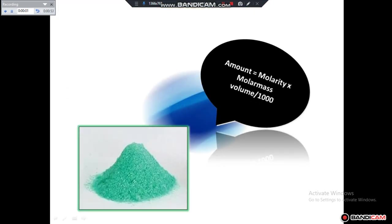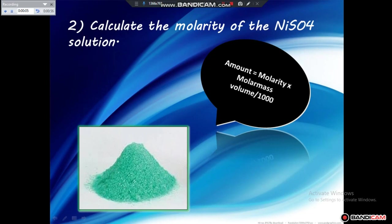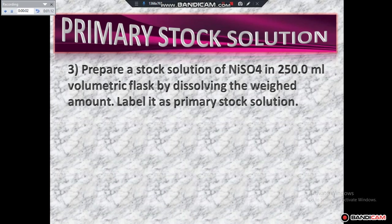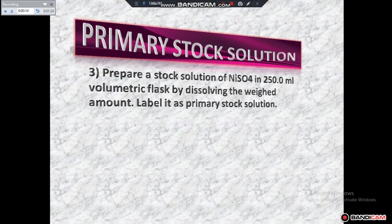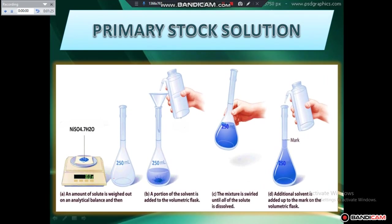After weighing out the nickel sulfate salt, we have to determine its molarity by using the formula: amount = molarity × molar mass × volume / 1000. In the third step, we have to prepare a primary stock solution by dissolving the weighed amount in a 250 ml volumetric flask and label it as primary stock solution. This picture explains how to prepare the primary stock solution: weigh the solute, add a portion of solvent to the flask, mix until all solute is dissolved, then add additional solvent up to the mark.